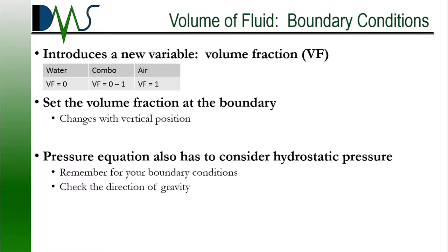If you have more than two fluids in your domain, you will have multiple volume fractions that you're tracking. This is a new variable that we introduce. Variables mean new transport equations and new boundary conditions. How do you set the volume fraction at the boundary?